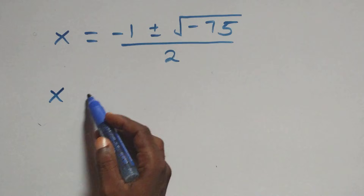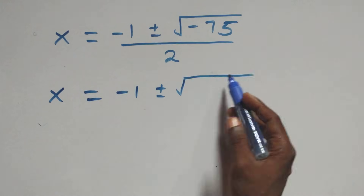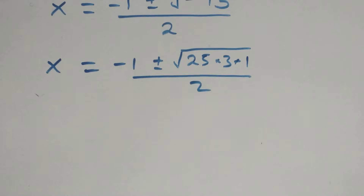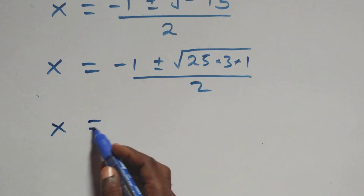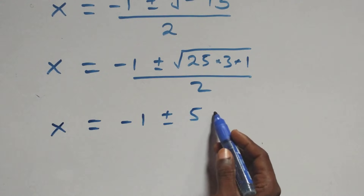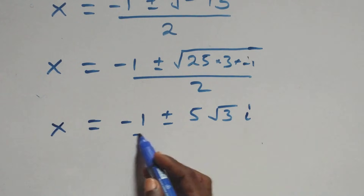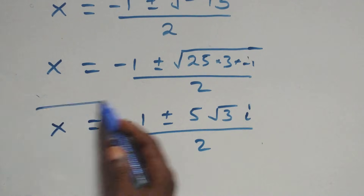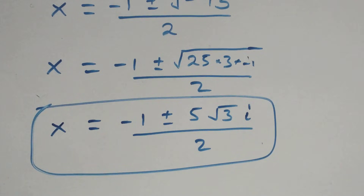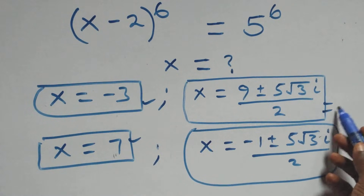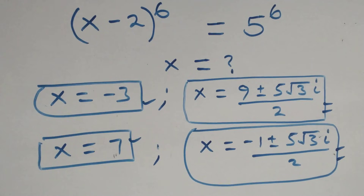We can write this as x equals minus 1 plus or minus square root of 25 times 3 times minus 1, over 2. Separating the root, root of 25 is 5, so x equals minus 1 plus or minus 5 times root 3 times i, over 2. This also gives two complex solutions. Therefore, altogether we have six solutions: two real solutions and four complex solutions. Thank you for watching, don't forget to subscribe for more videos.